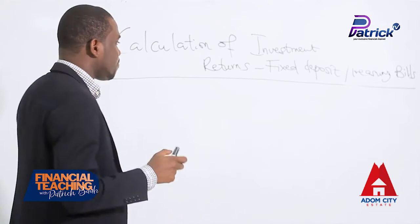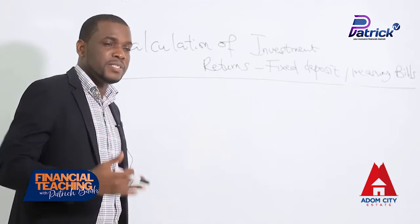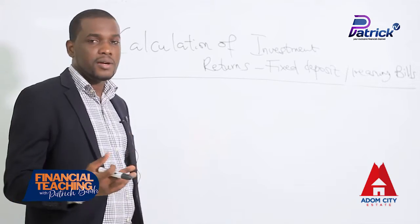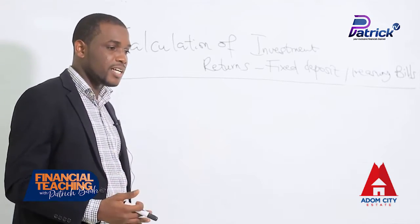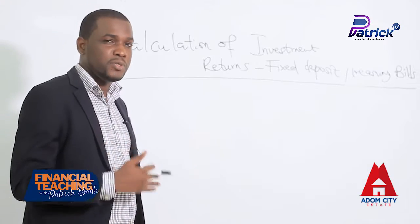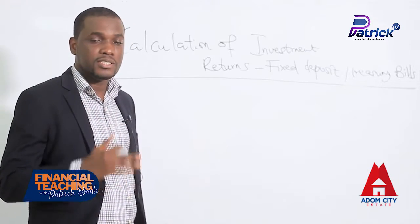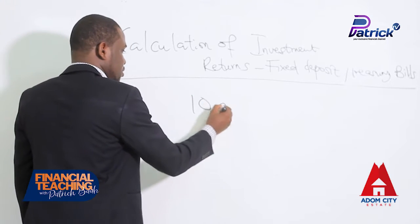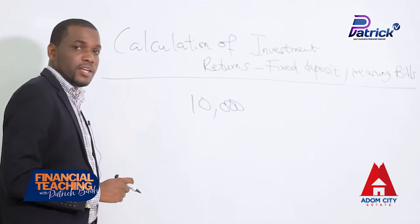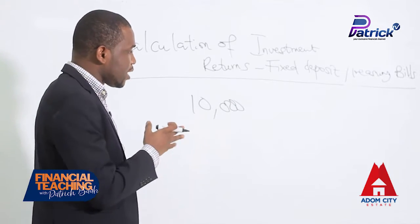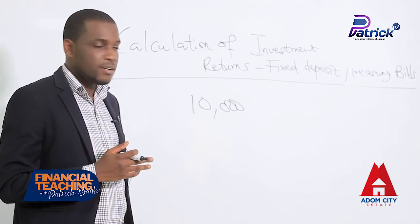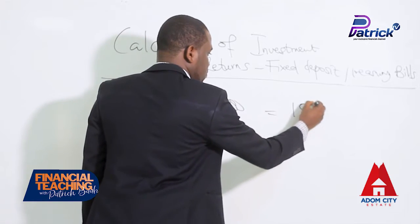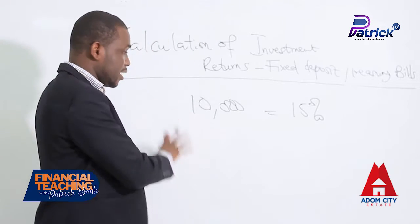They work almost in the same manner. So let's say you have been saving and listening to Patrick TV GH, and you have 10,000 Ghana cedis at a bank. From today's discussion, you want to go and invest that 10,000 in a universal bank or any other financial institution's fixed deposit. The bank says that for 10,000, if you want to invest for one year, they are going to give you 15% returns on the 10,000 for one year.